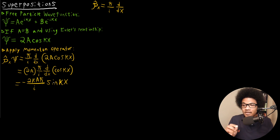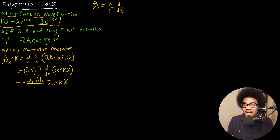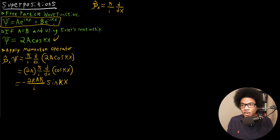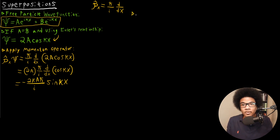So we run into an issue. The issue is we don't have both representations of this superposition. We've assumed the constants are both equal and collapsed this wave function down into a single function, and that is just not accurate. There's physical meaning behind each of these functions that we're missing when we collapse the wave function down to a single function.